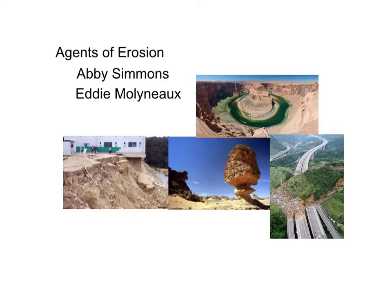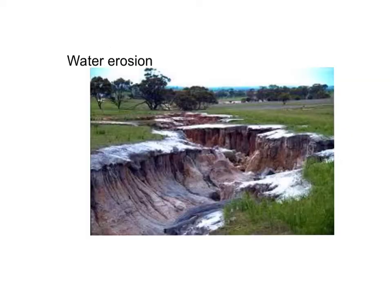Welcome to our Agents of Erosion presentation. There are four agents of erosion always wearing away the earth: water, wind, ice, and gravity.